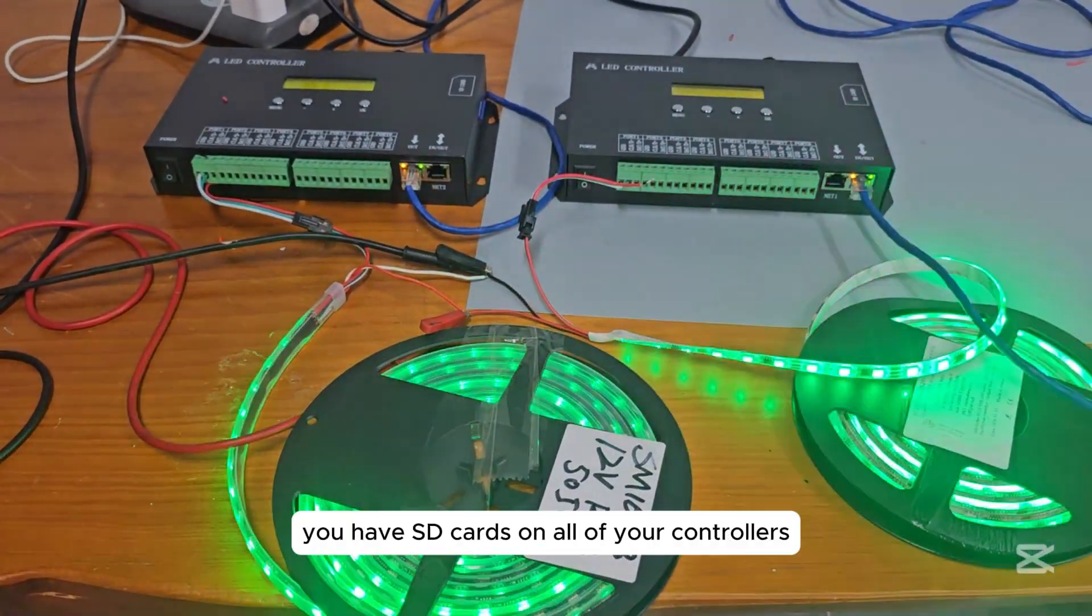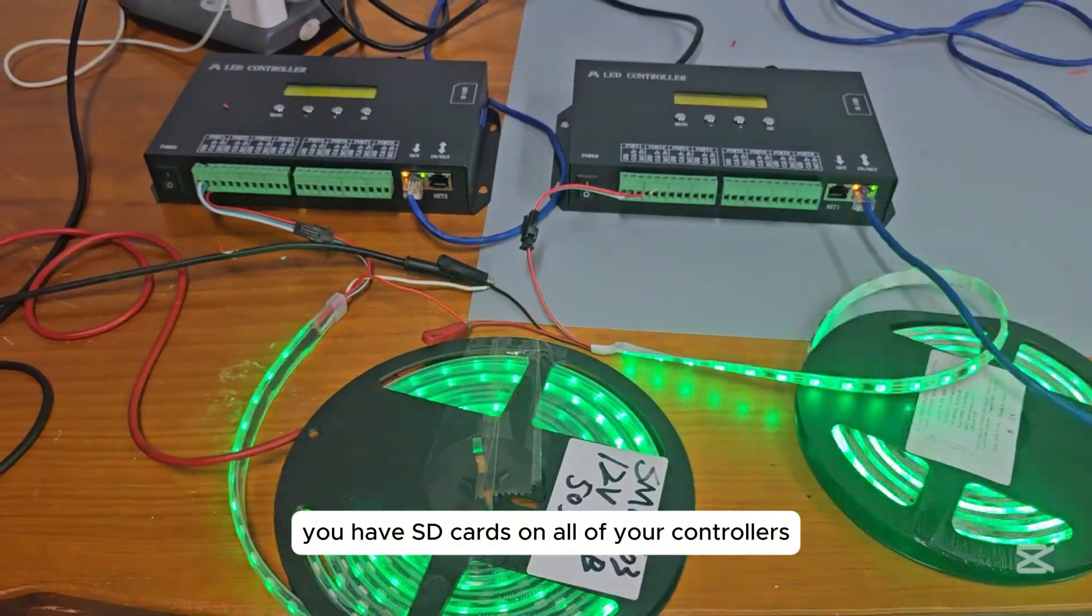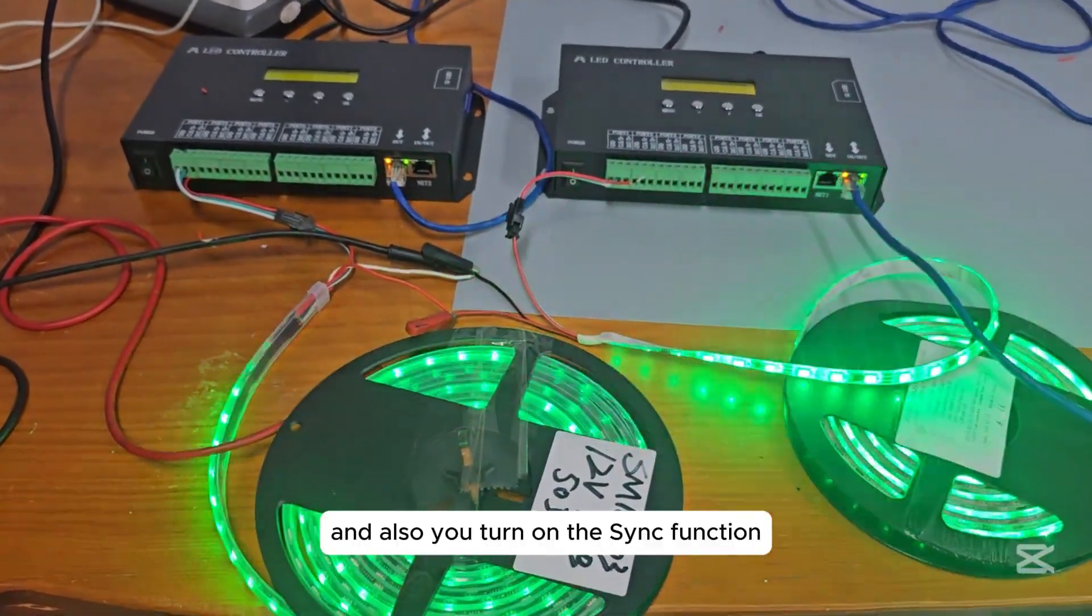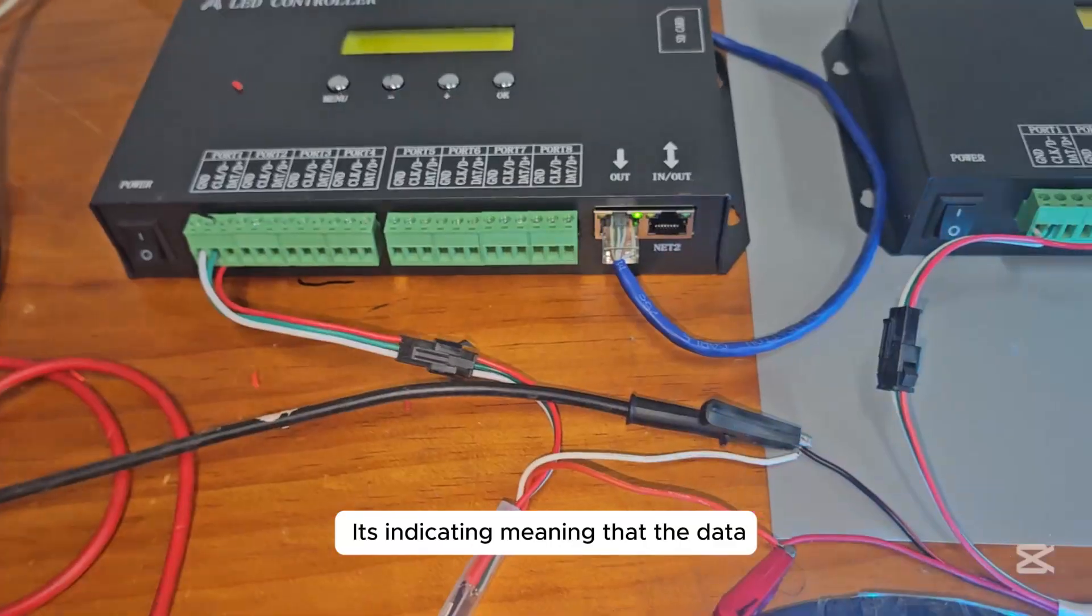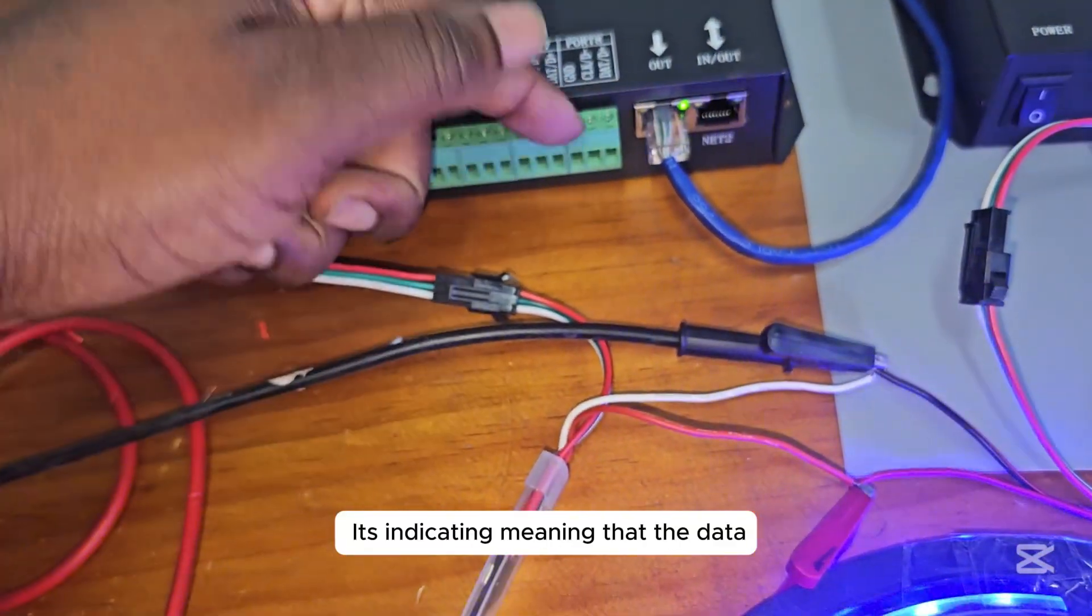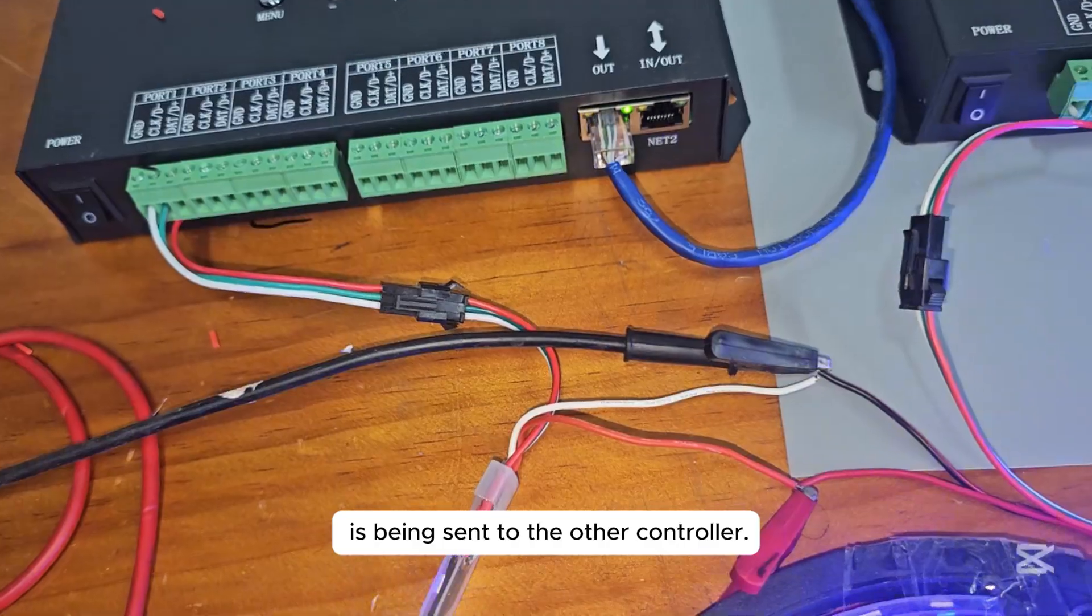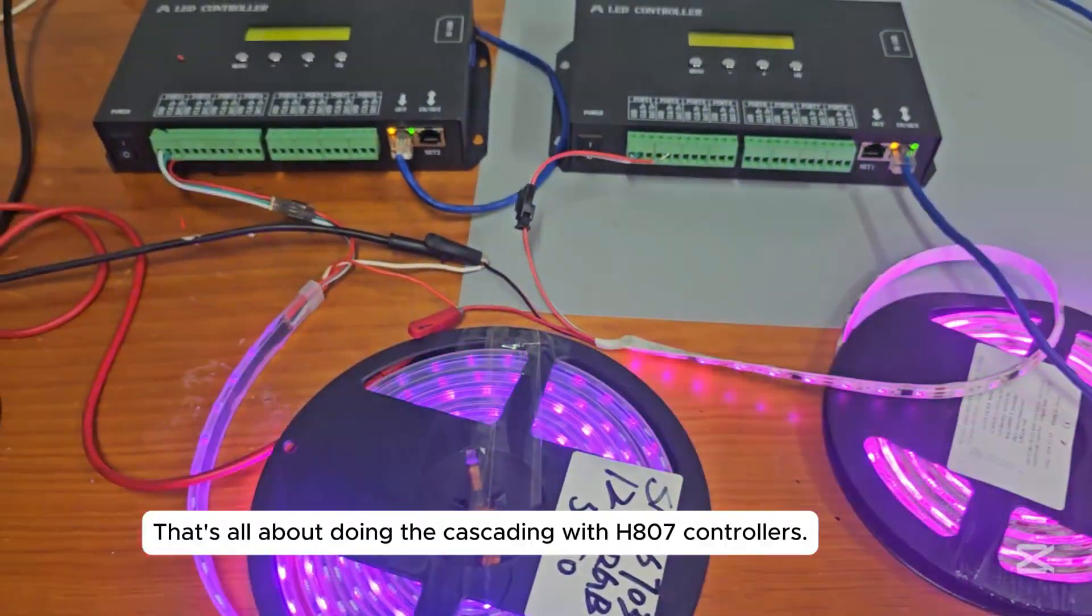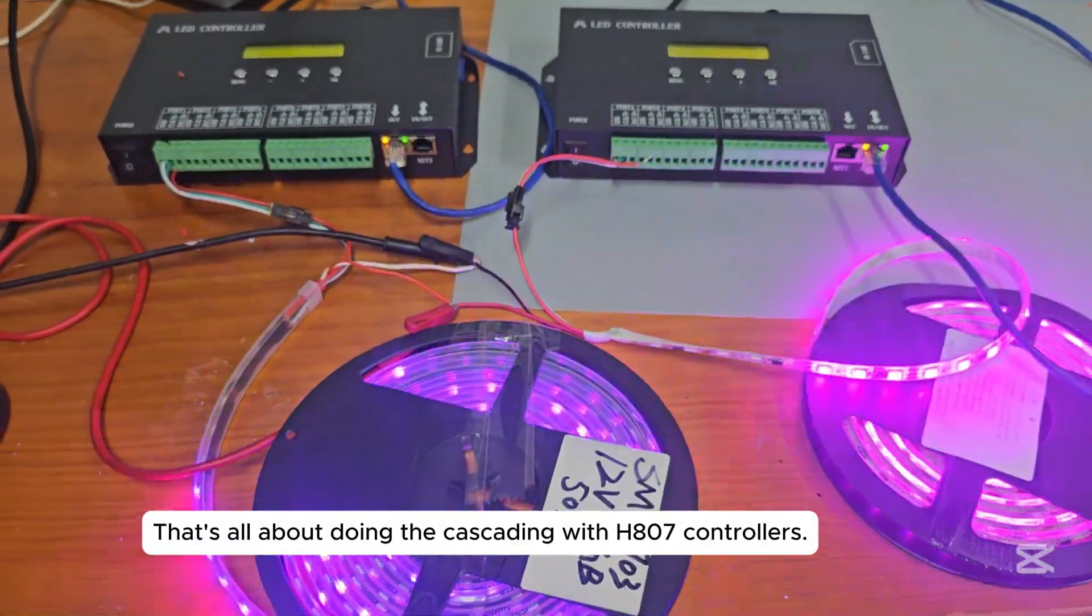Make sure when you are doing cascading you have SD cards on all of your controllers and also you turn on the sync function so you can have the same effects. It's indicating, meaning that the data is being sent to the other controller. That's all about doing the cascading with H807 controllers.